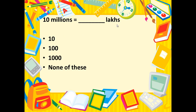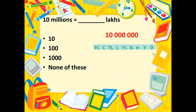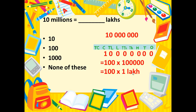Further, we have to tell how many lakhs ten millions is equal to. Ten millions is according to the international system. Lakhs are used in the Indian system. The places in the Indian system are: ones, tens, hundreds, thousands, ten thousands, lakhs, ten lakhs, crores. If we want to write ten millions, it equals one crore. Expressing it in terms of lakhs, one crore equals one hundred lakhs, so the correct answer is one hundred.